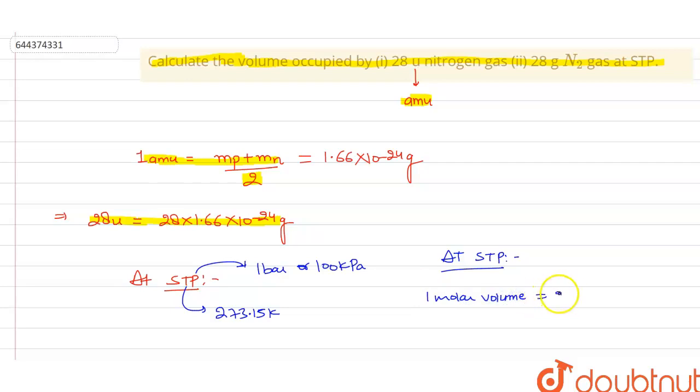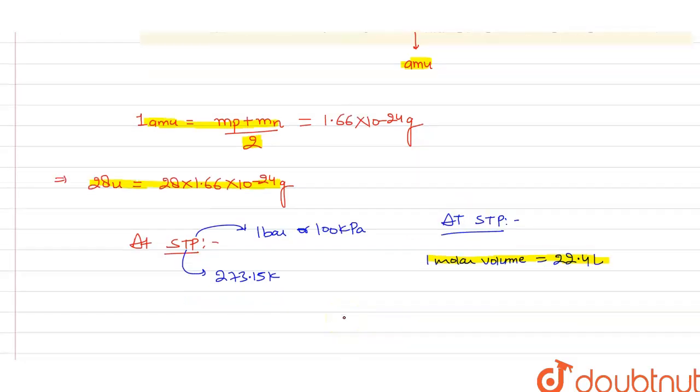And we know that one mole of nitrogen, from the periodic table it can be calculated that the molar mass of one nitrogen atom is 14, and we are having two nitrogen atoms in nitrogen molecule, so it will be 28 gram.